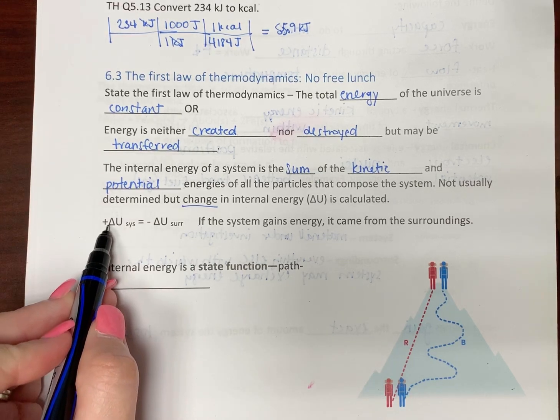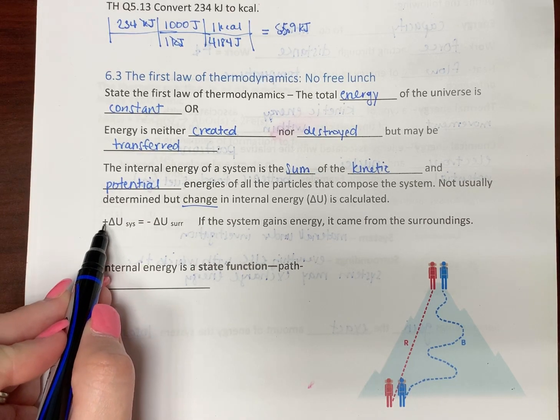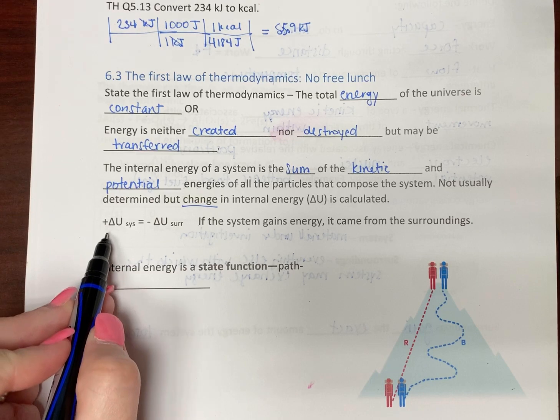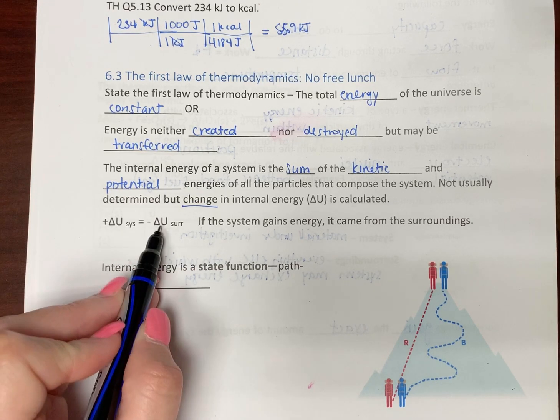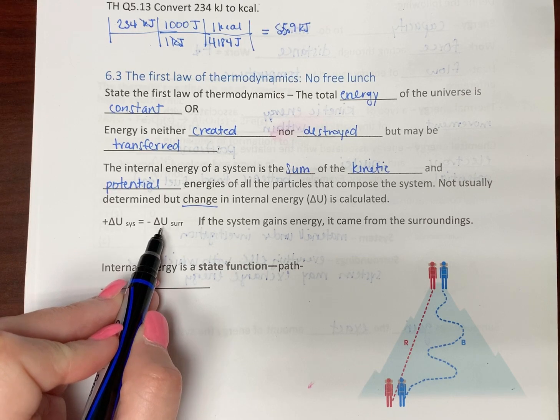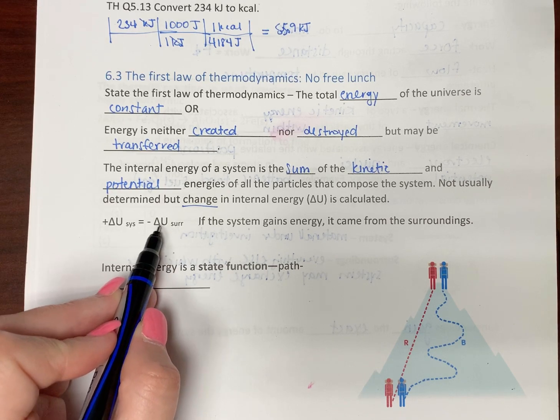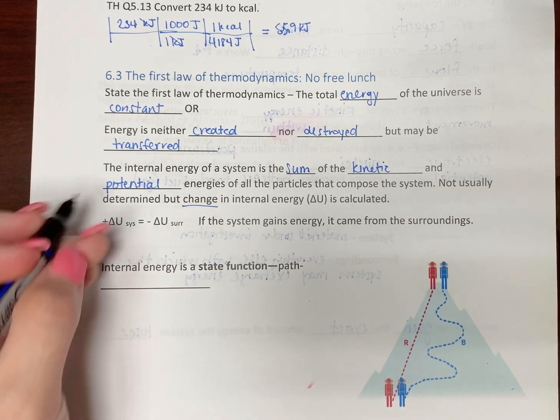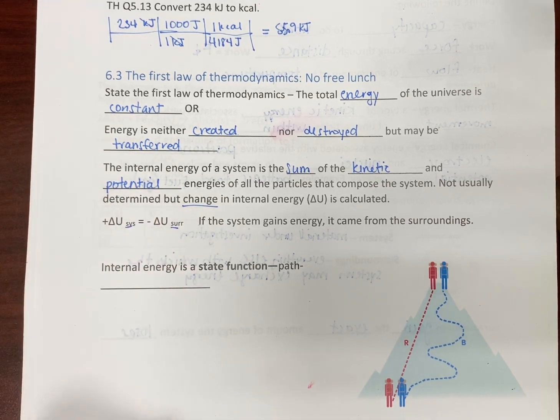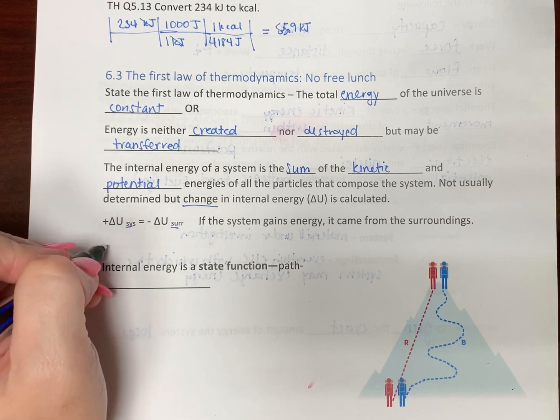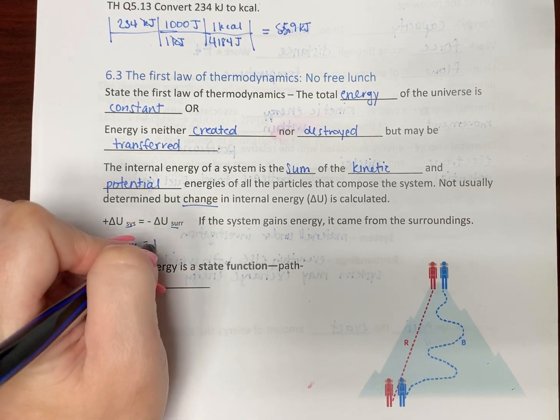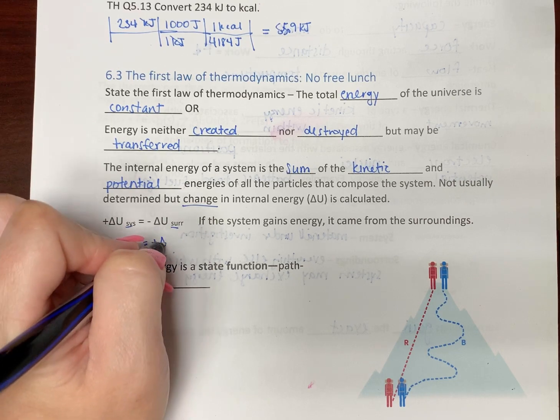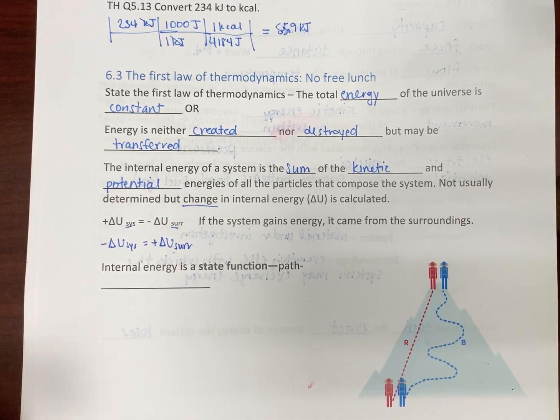Alright, so, this says, if the internal energy of the system is positive, then it has to come from the surroundings. So, the system gains, the surroundings lose. So, even though the surroundings is everything else, the surroundings also have an internal energy. So, you have to know what's the system and what's the surroundings. So, the same thing is also true. If the system loses energy, then the surroundings gain the energy.